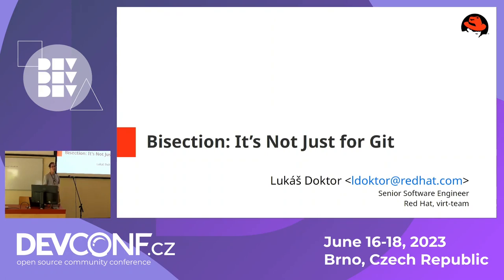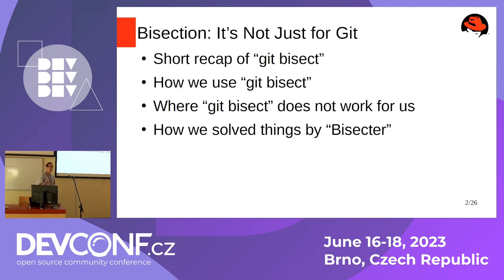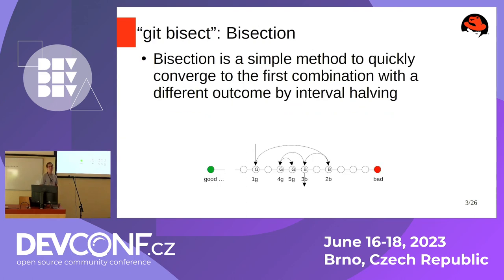Hello, I'm Lukáš Doktor from Red Hat, from the Virt Team, and today I'd like to talk a bit about bisection — and not just for Git. I'll do a short introduction for those who aren't familiar with it, then cover our usage and things we were solving. Then we'll move to places where Git bisect didn't work for us and why we had to create something new, inspired by Git bisect.